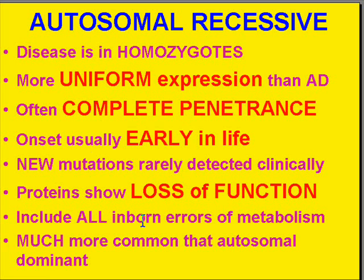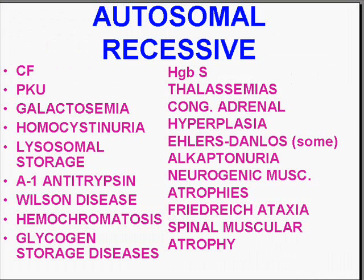If you take the single largest group of genetic diseases — the so-called inborn errors of metabolism and the lysosomal storage diseases — these are all generally autosomal recessive. So in general, autosomal recessive diseases are a lot more common than autosomal dominant, and that's why we have two columns.